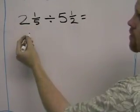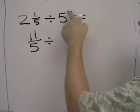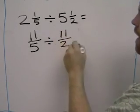Well, 2 and 1 fifth turns into 11 fifths divided by, and 5 and 1 half turns into 11 halves.